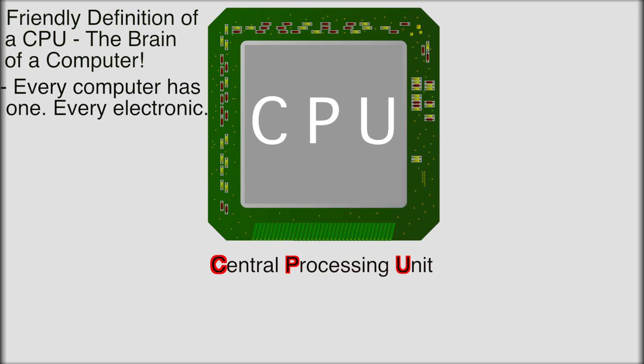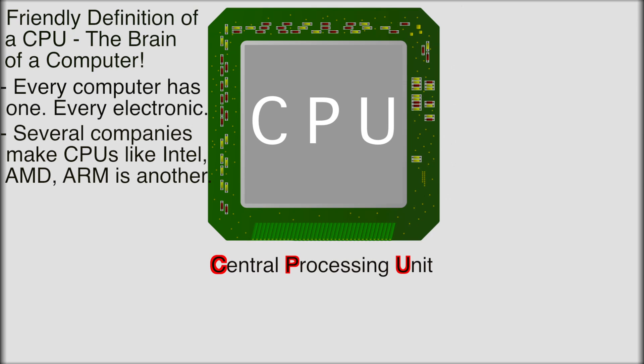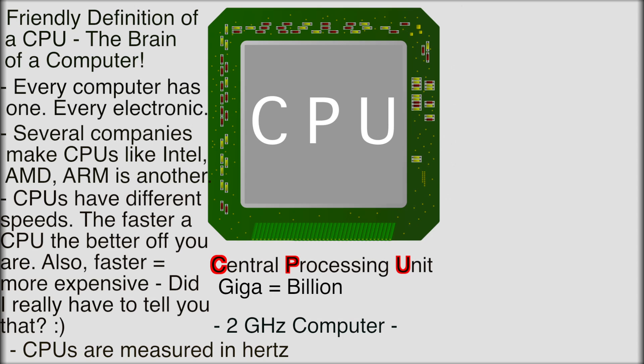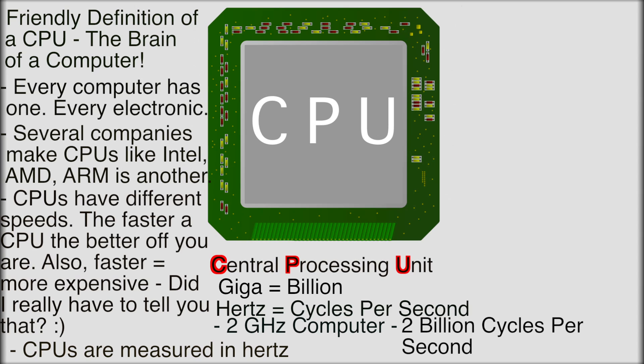Every computer has a CPU, and there are different companies that make them. Two of them would be AMD and Intel — both have their ups and downs. Every CPU is rated differently by its speed, called the clock speed, and this is measured in hertz, which means cycles per second. So if you have a two gigahertz CPU, giga means billion, so that's two billion cycles per second. When you think of two billion in real-world terms, that's a lot.